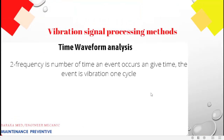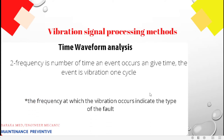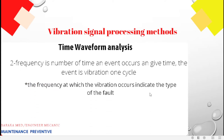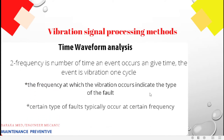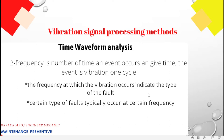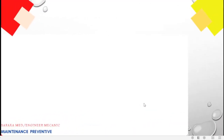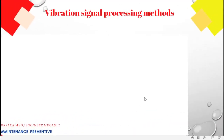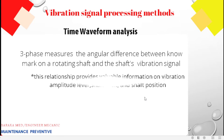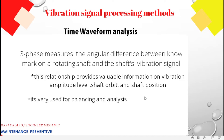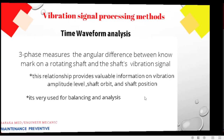The second characteristic is frequency — the number of times a vibration event occurs per unit of time. The frequency at which vibration occurs indicates the type of fault, as certain fault types typically occur at certain frequencies. The third characteristic is phase, which measures the angular difference between a reference mark on the rotating shaft and the shaft vibration signal.